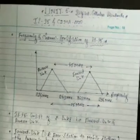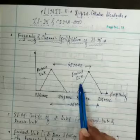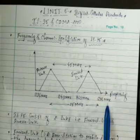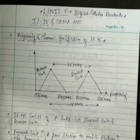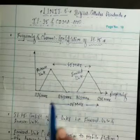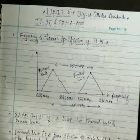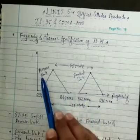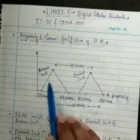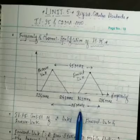Three MCQs will arise from this topic. The first MCQ: the frequency band for the forward link is 869 MHz to 894 MHz. The second MCQ: the frequency band for the reverse link is 824 MHz to 849 MHz. The third MCQ: the separation between the forward link and reverse link is 45 MHz, and the guard space is 25 MHz.